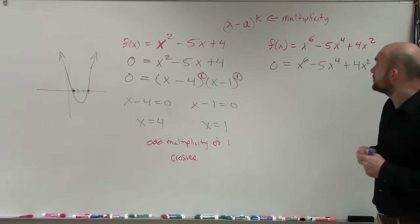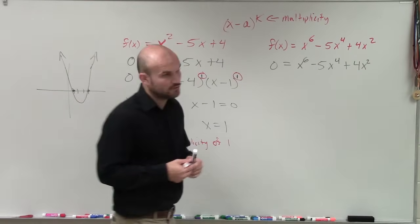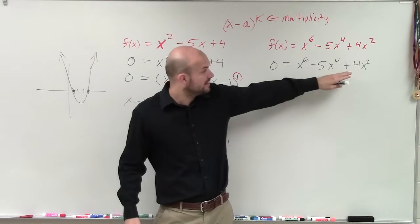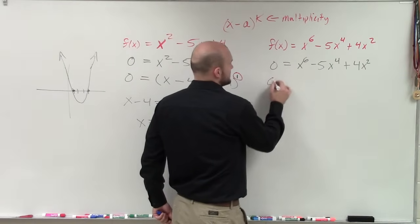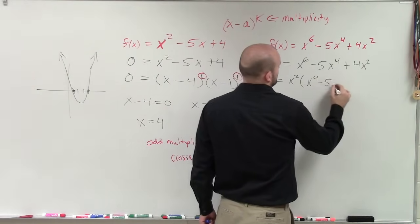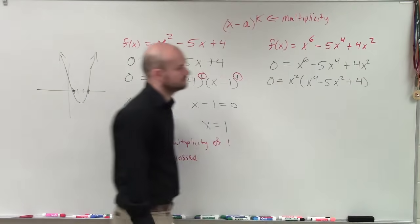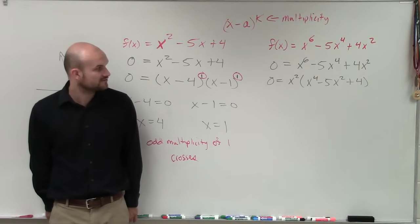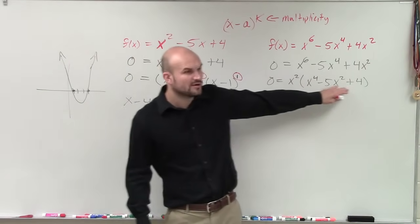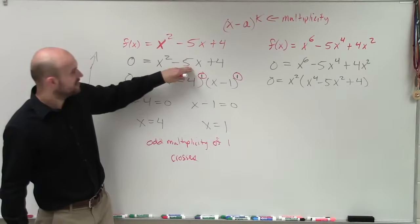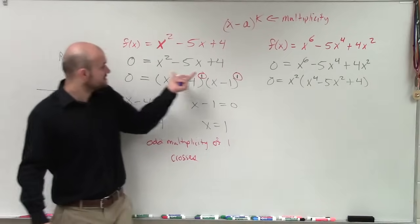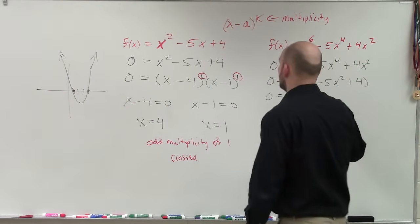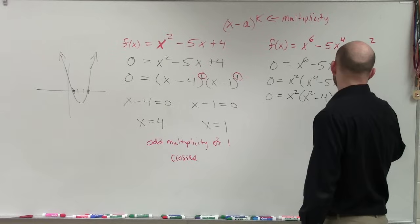Now let's go over to this problem. This problem, we have x to the 6 minus 5x to the 4 plus 4x squared. Now if I was going to factor a problem like this, first of all, you always want to see what you can factor as far as a GCF. And I noticed that they all have an x squared. So let me factor out an x squared. Now, we need to go ahead and factor this further. So you might look at this and say, well, how do I factor this? Well, ladies and gentlemen, do you see how this and that are exactly the same? The only difference is instead of using x times x, I have to get to x to the 4th. So when I factor this, I'm going to use x squared minus 4 times x squared minus 1.